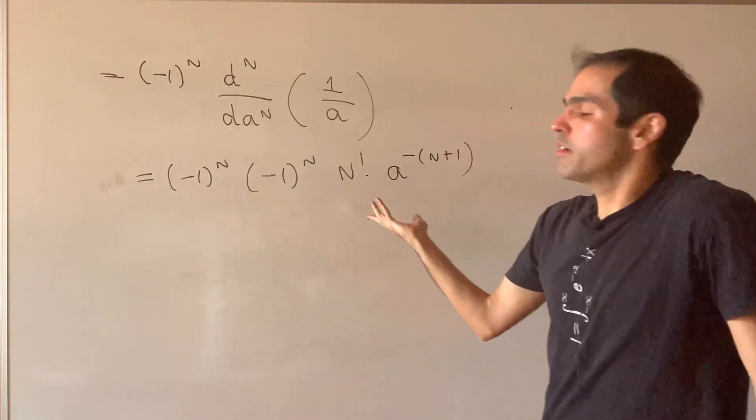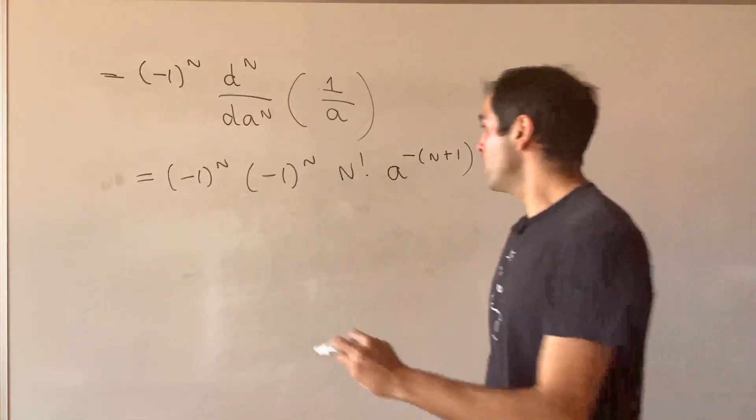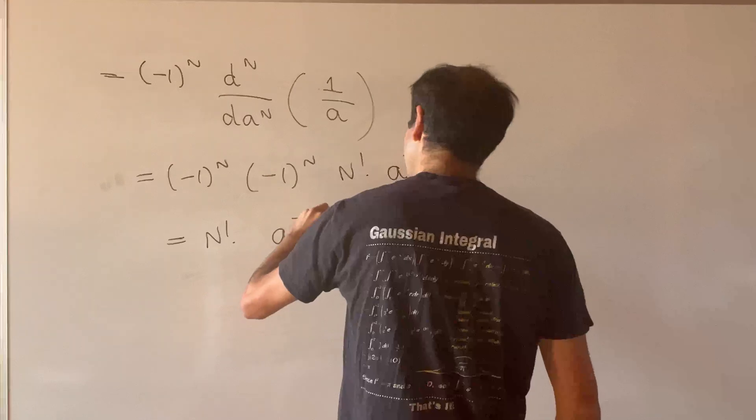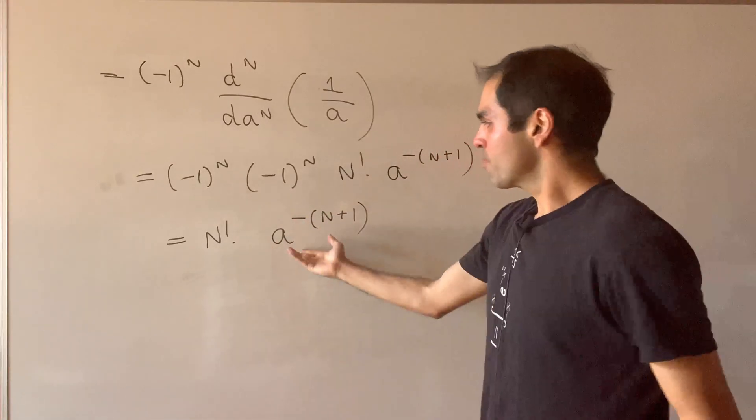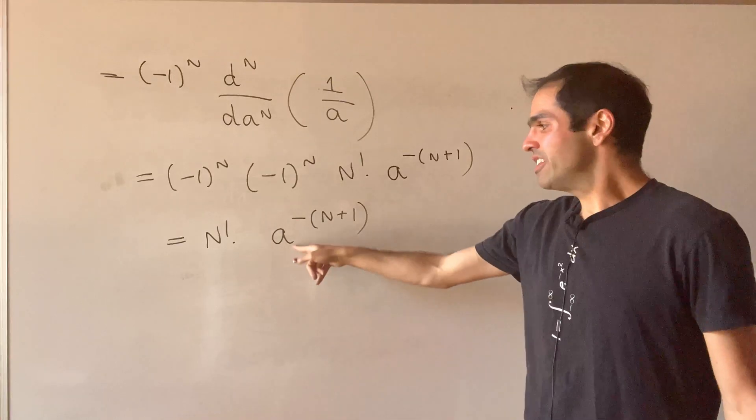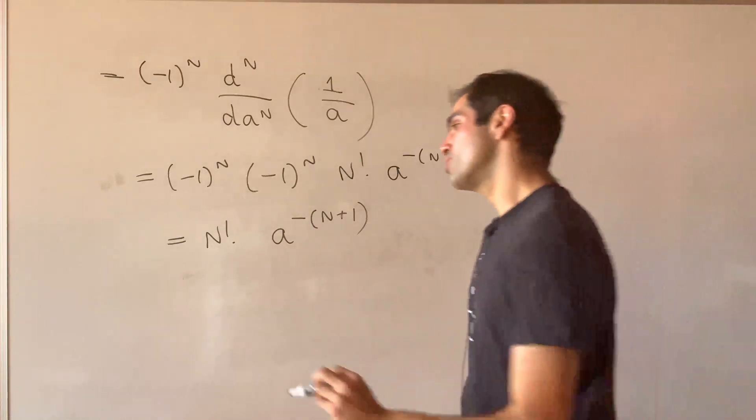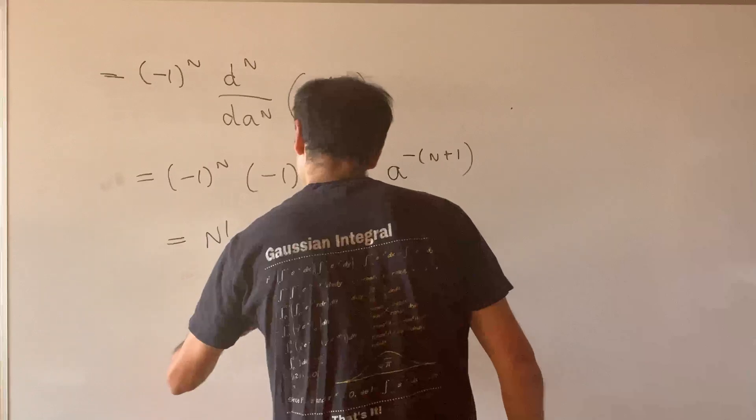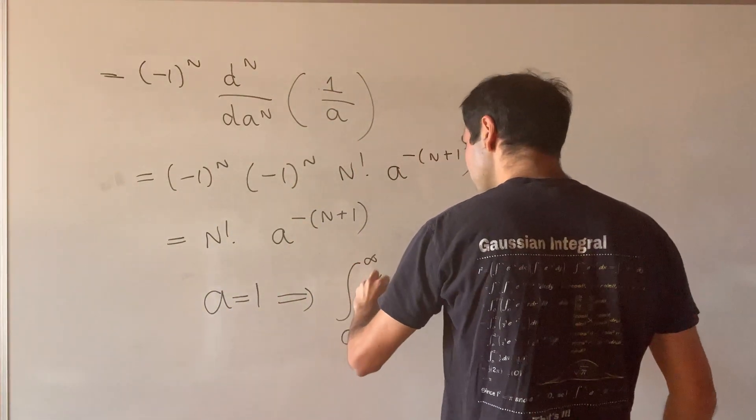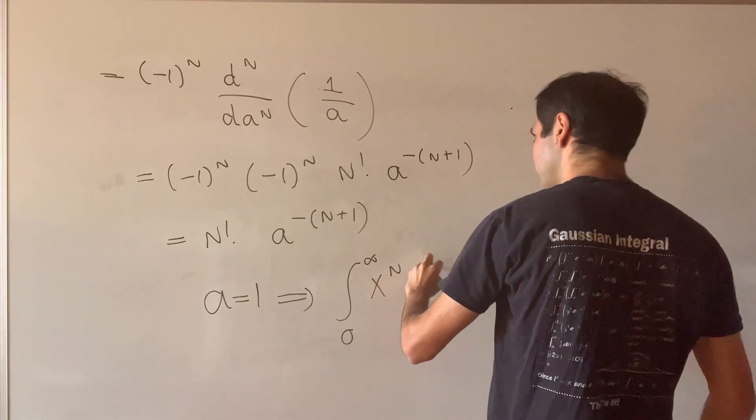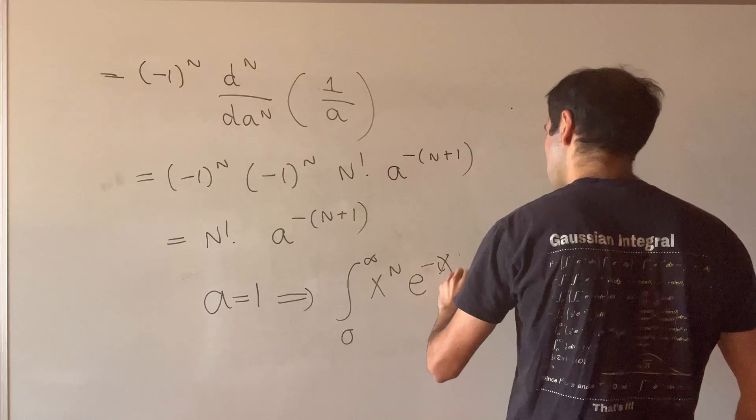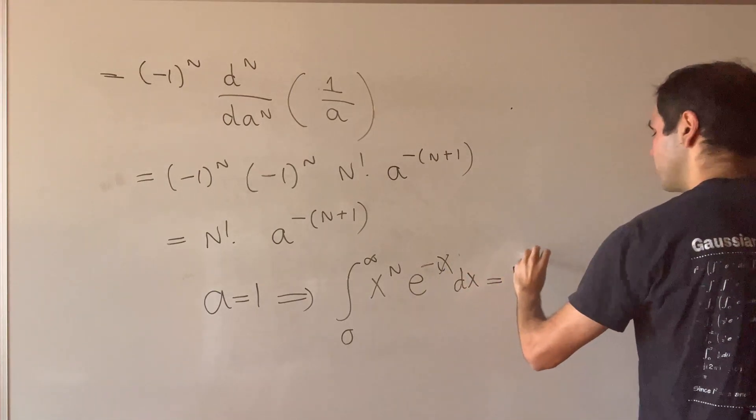Now minus 1 to the n times minus 1 to the n, that's just 1, so you get n factorial times a to the minus n plus 1. And to evaluate our original integral, you just set a equals 1. So in the end, you get the result that the integral from 0 to infinity of x to the n times e to the minus x dx is just n factorial.